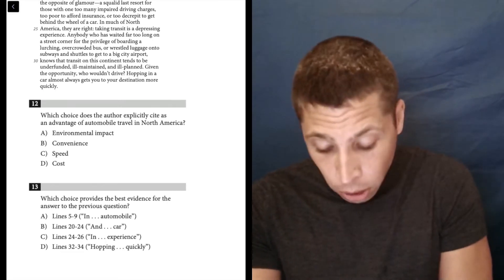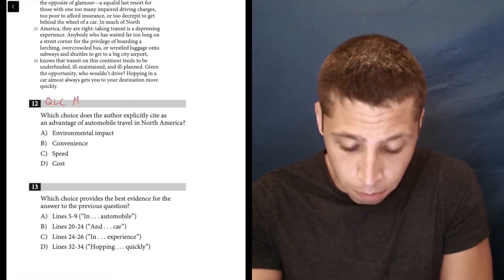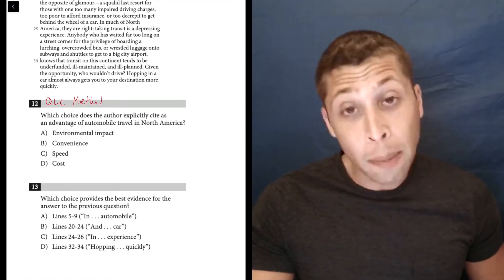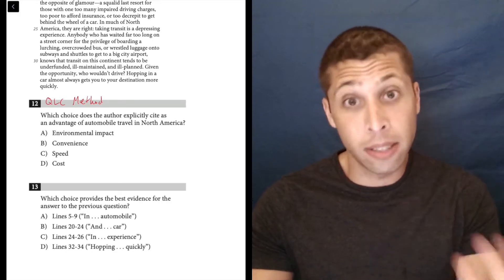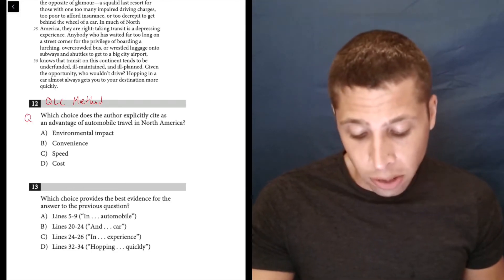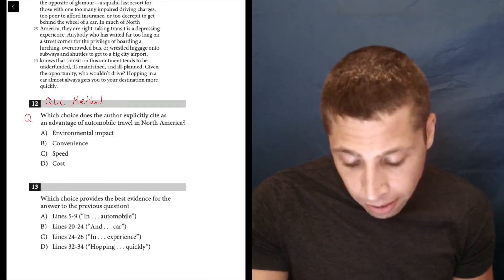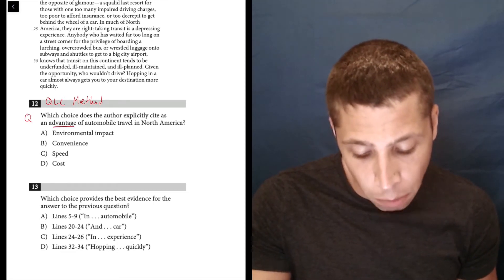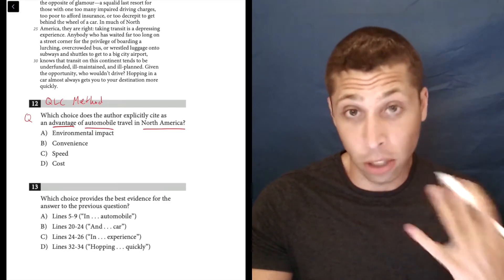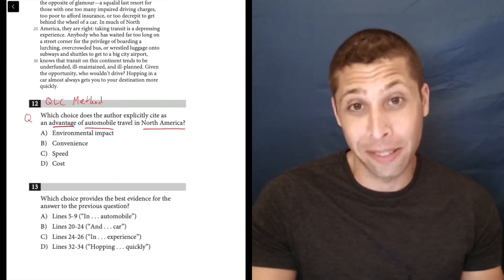So let's sort through. I would still follow the QLC method here. Remember, this is our way of answering pretty much every reading question, and it keeps us organized, especially when we have these doubles. So it means I need to first read the question. Which choice does the author explicitly cite as an advantage of automobile travel in North America? Okay, so explicit means they're just going to say it. So that's good for us. That means it should be easy to spot.